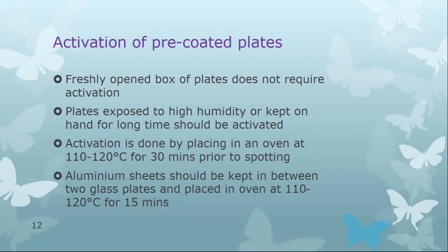Activation means removal of water or solvent that is adsorbed on the plate — in this case, moisture from the atmosphere absorbed during storage. We go to a temperature above 100°C, preferably 110 to 120°C for 30 minutes, done prior to spotting. Aluminum pre-coated sheets should be kept between two glass plates and placed in the oven at 110 to 120°C for 15 minutes, to ensure they do not warp and remain flat for development.